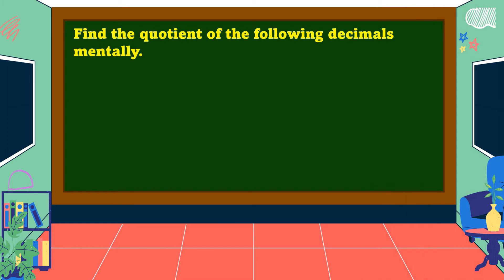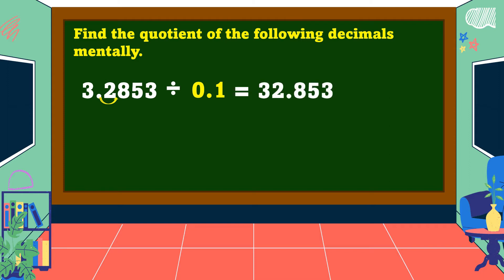For example, find the quotient of the following decimals mentally. Three and two thousand eight hundred fifty-three ten-thousandths divided by one-tenth. In dividing decimals by one-tenth, move the decimal point one decimal place going to the right, and the answer is equal to thirty-two and eight-hundred-fifty-three thousandths.